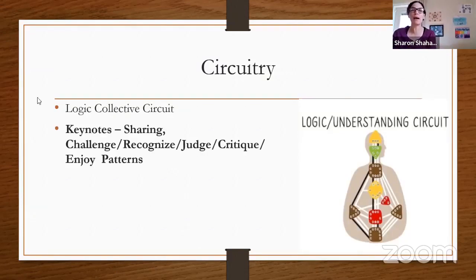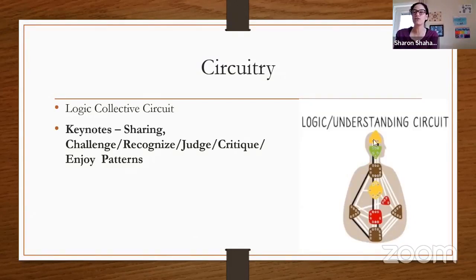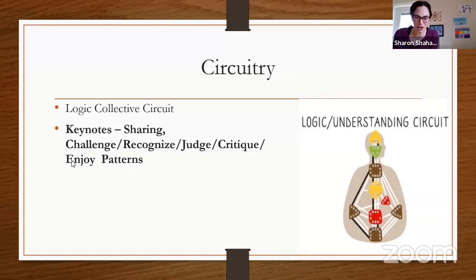A recap of the keynotes for the logic collective circuit: every collective energy involves sharing. You could use the word 'sharing' to describe what each channel does. For the 63, it shares its doubt and shares its question. Key process words: sharing, challenging, recognizing, judging or critiquing, or enjoying patterns. I added 'enjoy' because the gate 58 is the joy of life — the fuel to start a process of correction or challenge of a pattern, but it's not supposed to be all heavy and judgmental. It can be joyful.